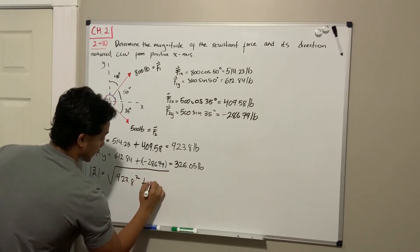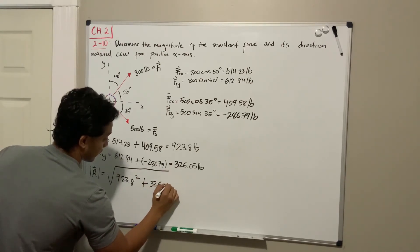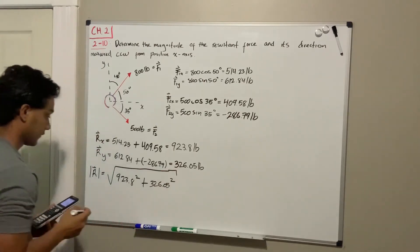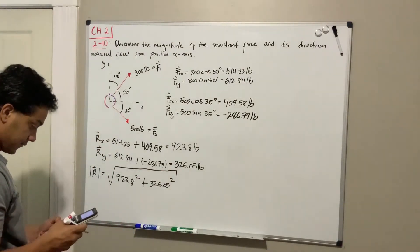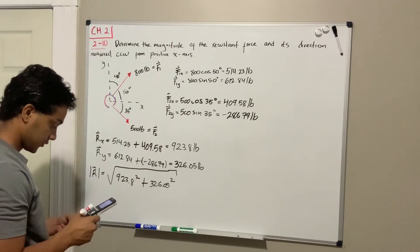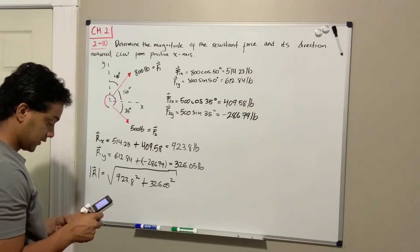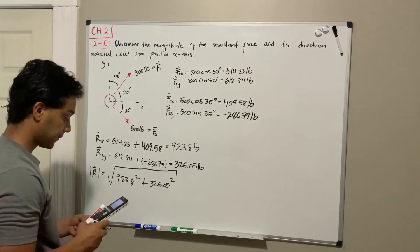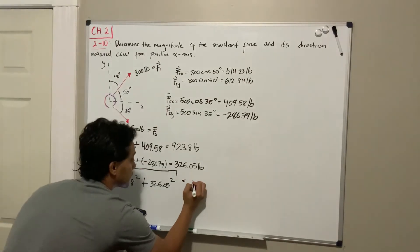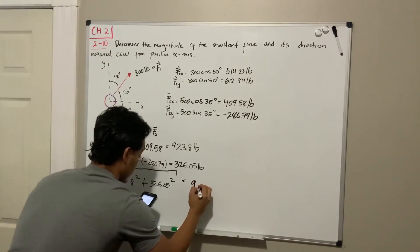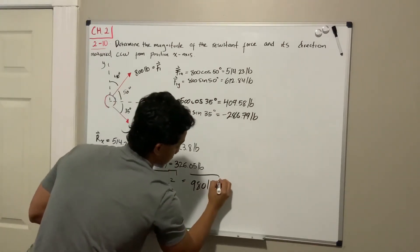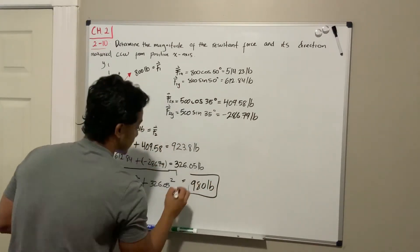So we use the square root of the 923 squared plus the 326 squared, and we get that its magnitude is actually equal, rounded up, to 980 pounds. So we found our first answer which is 980 pounds.